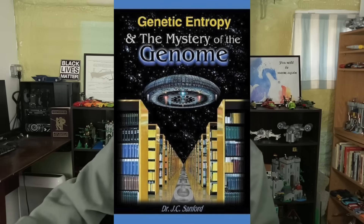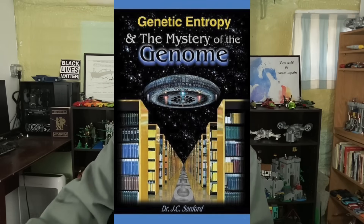Genetic entropy comes from Dr. John Sanford, a young earth creationist geneticist. He wrote a book called Genetic Entropy and the Mystery of the Genome, published in 2005. The basic idea is that on net, mutations are going to be harmful. Most mutations will be both harmful and unselectable, meaning natural selection can't do anything about them, so mutations are accumulating.